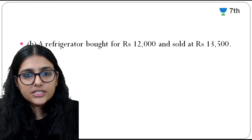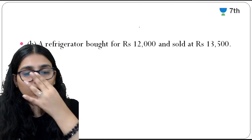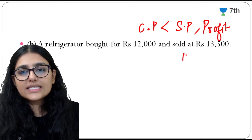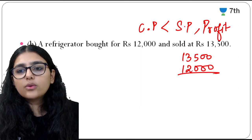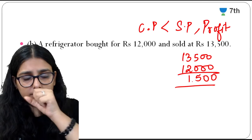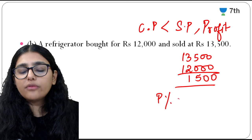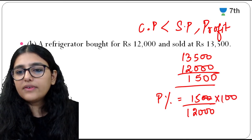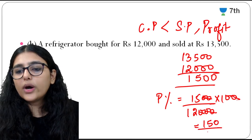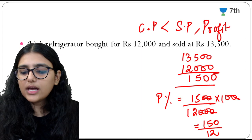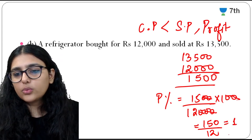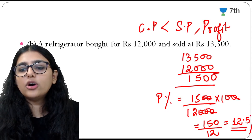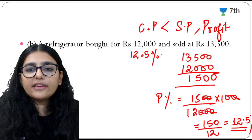A refrigerator is bought for Rs. 12,000 and sold at Rs. 13,500. Cost price < selling price, so it is profit. Profit = 13500 − 12000 = Rs. 1500. Profit percent = (1500/12000) × 100. Cancelling zeros: 150/12 = 12.5%. So profit percent is 12.5%.